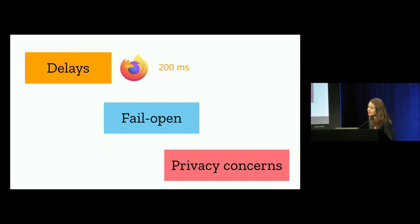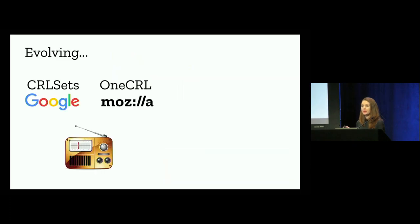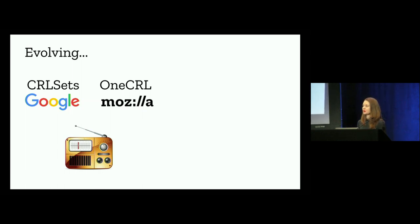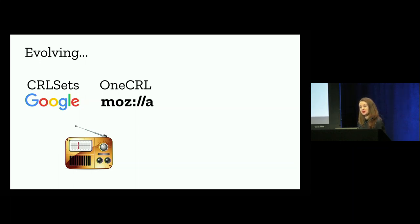Of all the methods deployed at scale, there are problems: they add delays and latency, they fail open, and there are privacy concerns. But what if we could push all revocation information to all clients? We might not need to fail open, and we would address the privacy concerns. There are some initiatives in this space — Google has CRL Sets and Mozilla has OneCRL — in which we push partial revocation information to clients. There have also been other methods suggested, including using FM radio, though I really don't think all clients are going to install FM receivers. The issue is size — this is a lot of information. And this is where CRLite comes in.